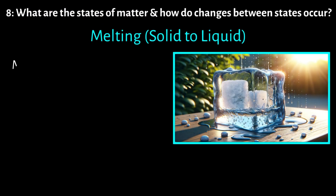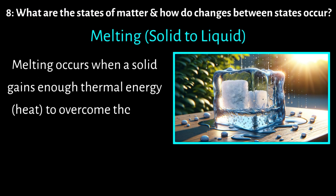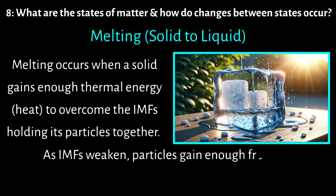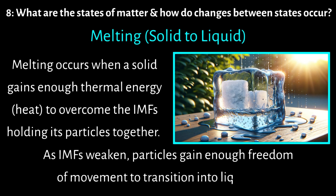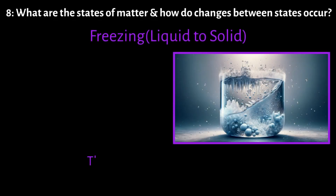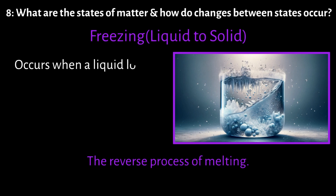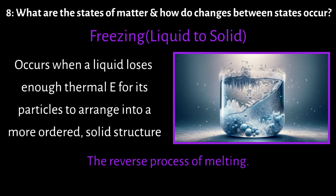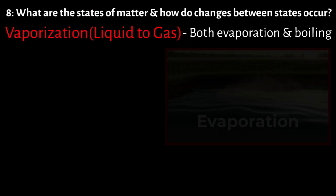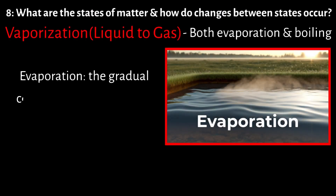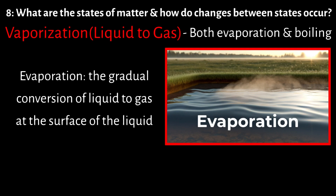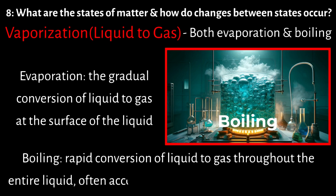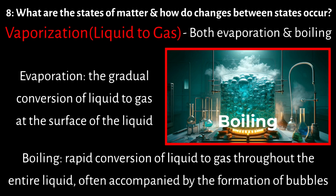Melting occurs when a solid gains enough thermal energy to overcome the intermolecular forces holding its particles together. As these forces weaken, the particles gain enough freedom of movement to transition into the liquid state. Freezing is the reverse process of melting — it occurs when a liquid loses enough thermal energy for its particles to arrange themselves into a more ordered, solid structure. Vaporization includes both evaporation and boiling. Evaporation is the gradual conversion of a liquid to gas at the surface, while boiling is the rapid conversion through the entire volume of the liquid, usually accompanied by the formation of bubbles.